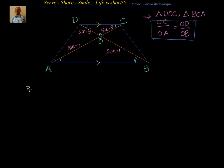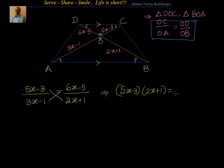Okay, what is OC? OC is 5X minus 3 divided by OA. OA is 3X minus 1 which is equal to OD. OD equal to 6X minus 5 divided by OB. OB equal to 2X plus 1. Now, let us do cross multiplication. I will have 5X minus 3 into 2X plus 1 is equal to 6X minus 5 into 3X minus 1.